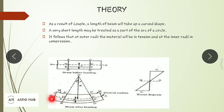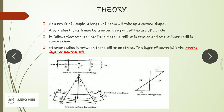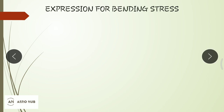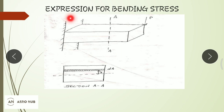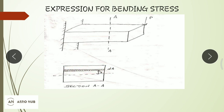The neutral layer is denoted by N-A and shown as a dotted line — this layer has no bending stress. The axis passing through the neutral layer is called the neutral axis. To derive the expression for bending stress, consider a cantilever beam with a load W applied at the free end. We take a section A-A and consider a shaded layer of area dA at a distance y from the central axis of the section.